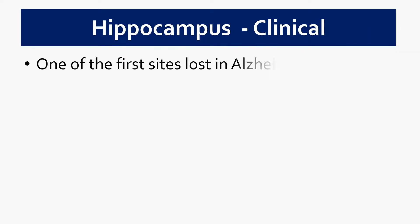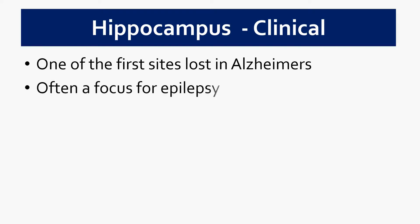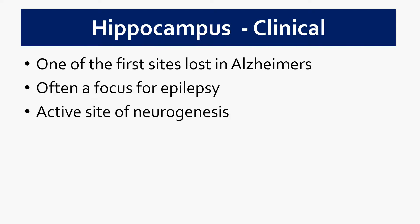The hippocampus is really important clinically because it's one of the first sites lost in Alzheimer's disease, explaining many of the memory deficits that are an early sign of Alzheimer's and other dementias. The hippocampus is also a frequent focus for epilepsy. Additionally, it's an important site for neurogenesis — the generation of new neurons. Certain drugs, particularly some SSRIs and antidepressants, are thought to work in part by stimulating neurogenesis in the hippocampus and elsewhere.